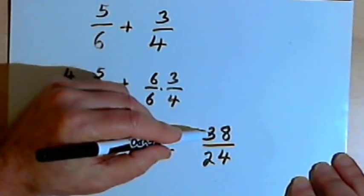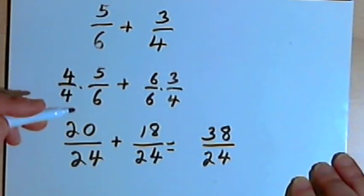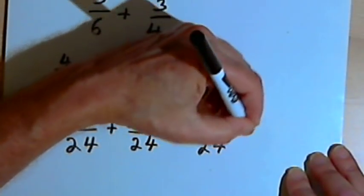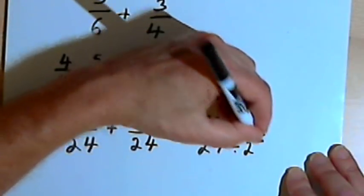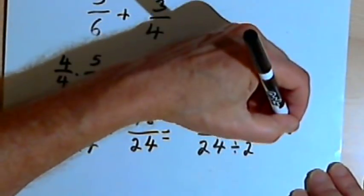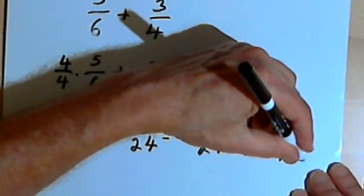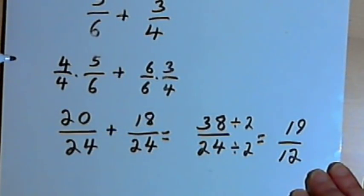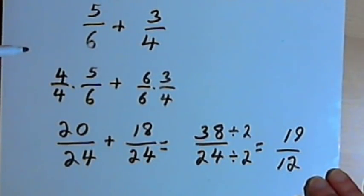Now these are both even numbers — 38 and 24 — so I could reduce this fraction. I could divide the 38 by 2 and divide the 24 by 2, and that would mean I would end up with 19 over 12. Now I did that without using the lowest common denominator. Let's do it again with the lowest common denominator and see if we get the same answer.